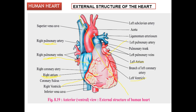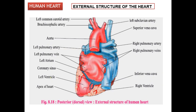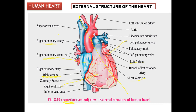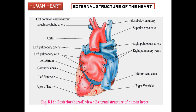This is the anterior view of the heart, and here is the dorsal or posterior view — the back of the heart. In the posterior view, you can see the aorta, the heart apex, left ventricle, right ventricle, inferior vena cava, and superior vena cava. The superior and inferior vena cava are the major blood veins that carry deoxygenated blood.